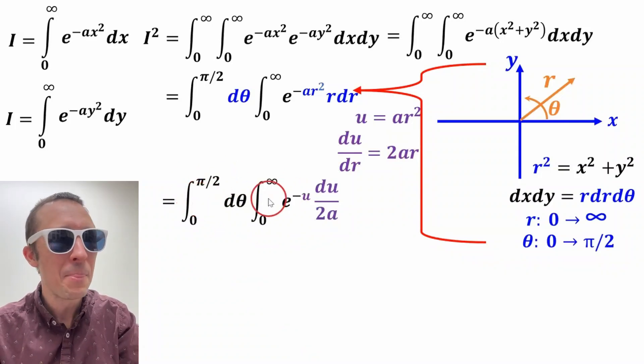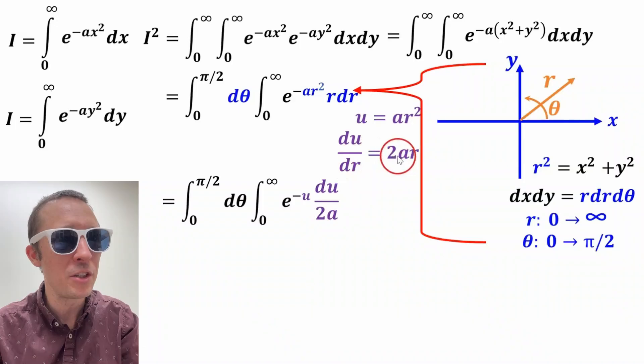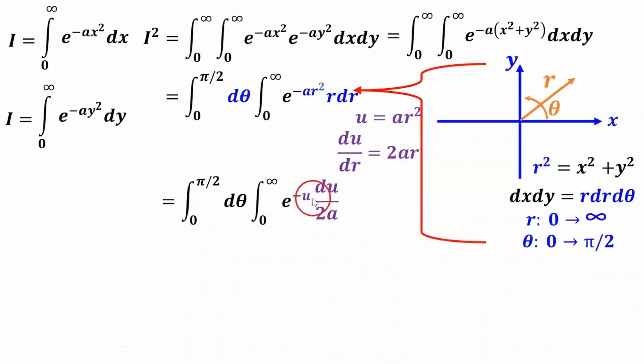So we didn't touch the left-hand integral, but the right-hand integral, we're now integrating e to the negative u rather than a r squared because of our substitution. And r dr, if we rearrange this equation, multiply both sides by dr, divide by 2a, we got r dr equals du over 2a, which we have right in here.